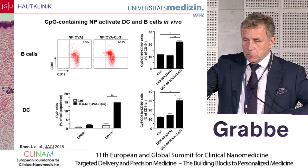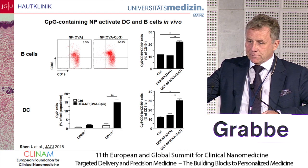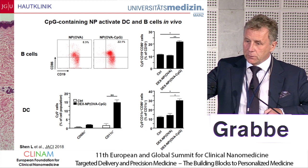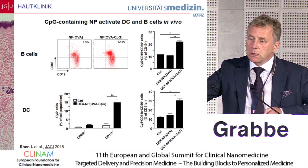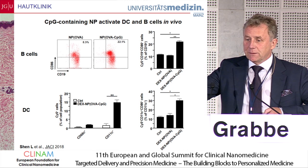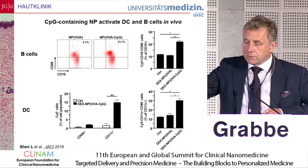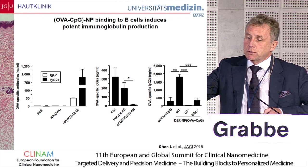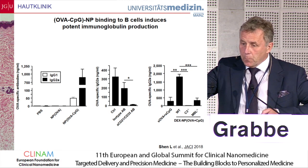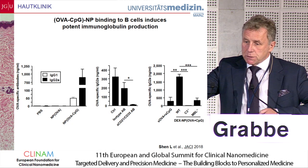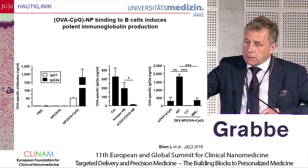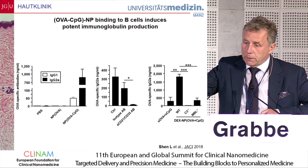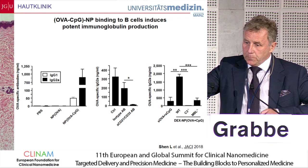These nanoparticles bind to both B-cells and dendritic cells. The question is whether B-cells also get activated, just like dendritic cells. As shown on the right side, surface marker expression of B-cells goes up the same way as dendritic cell surface marker expression. The B-cells respond with immunoglobulin production — both IgG1 and most prominently IgG2A, which is associated with a Th1 immune response — and this can be blocked by an antibody against the complement receptor or using complement-deficient or MBL-deficient B-cells.